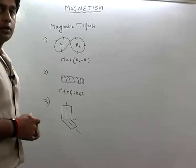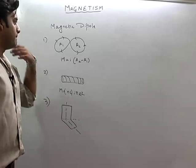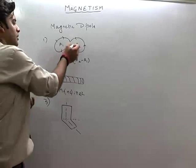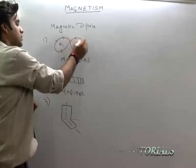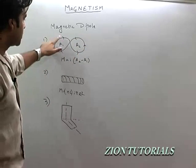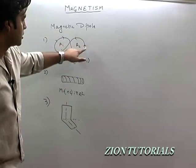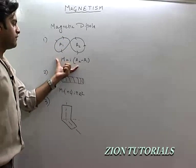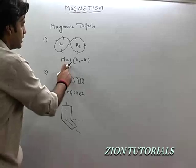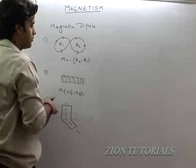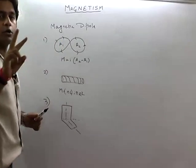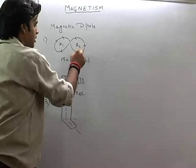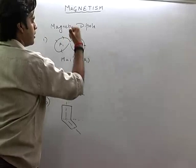Now let us come to another part, where we need to calculate the magnetic dipole value in different cases. Let us suppose we have a loop like this, and current is flowing in this manner, coming this way. What will be the value of M?